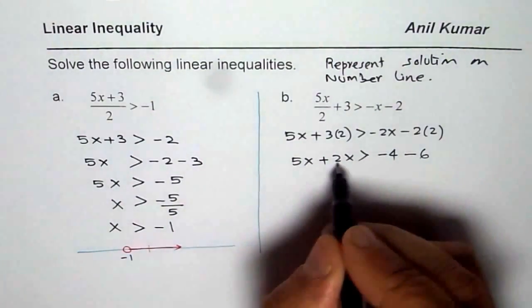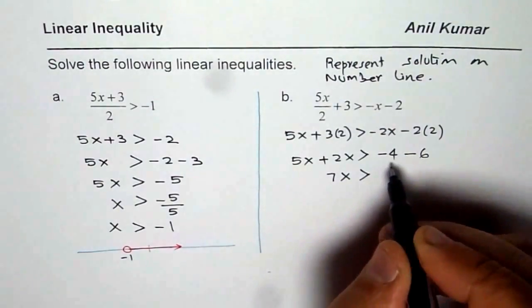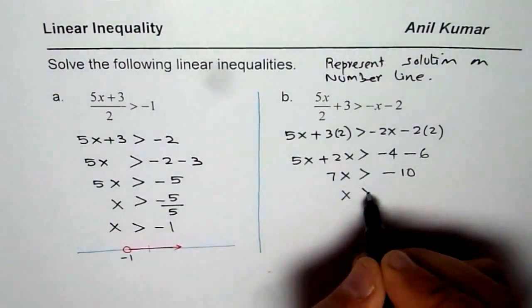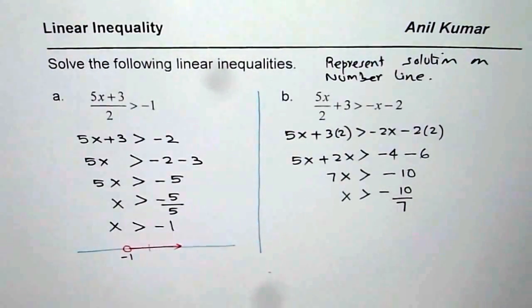Now we get 5 plus 2 is 7. So we get 7x is greater than minus 10. Or x is greater than minus 10 over 7. So that is how this is.